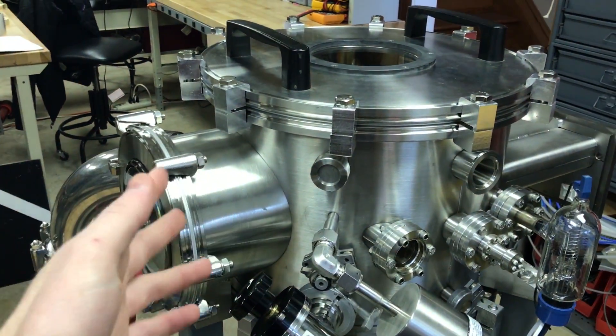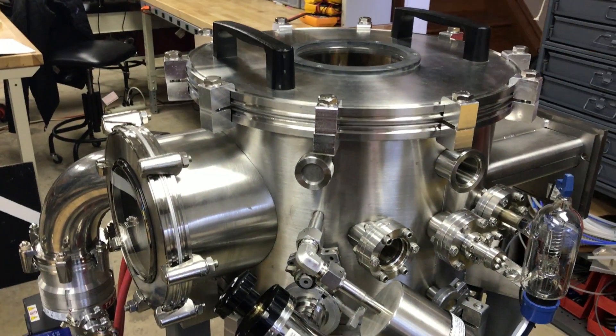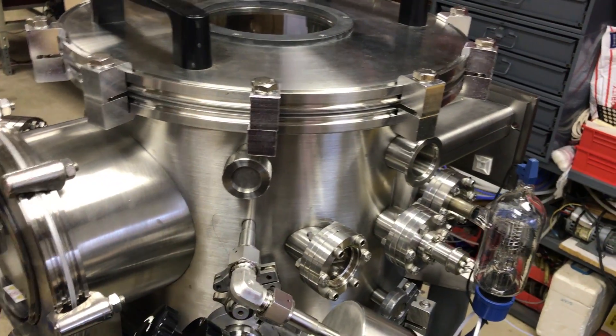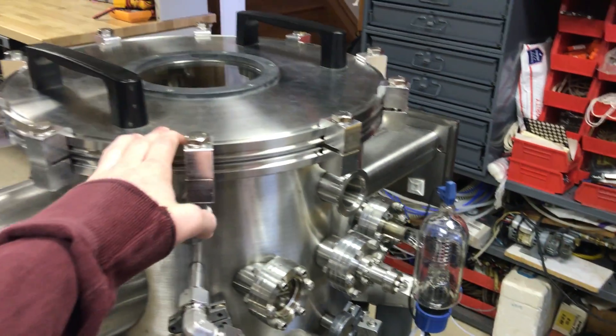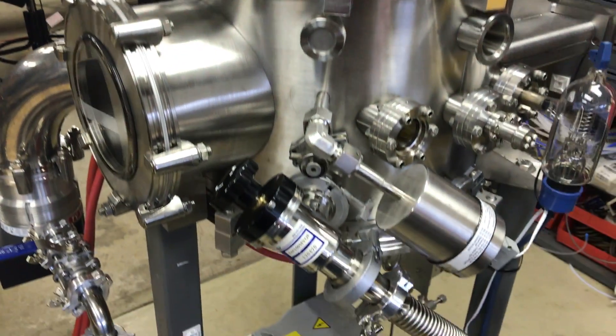But on a chamber like this, I can't expect to get into the ultra-high vacuum range just because of the fact that I have, you know, a very good amount of these ISO-style flanges. If everything were conflat, then we could go much, much higher vacuum.